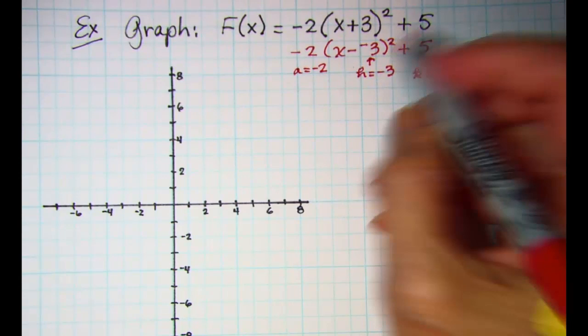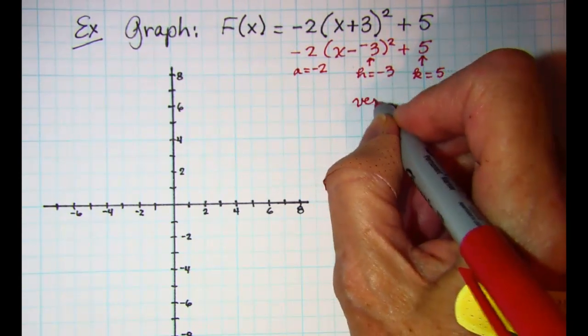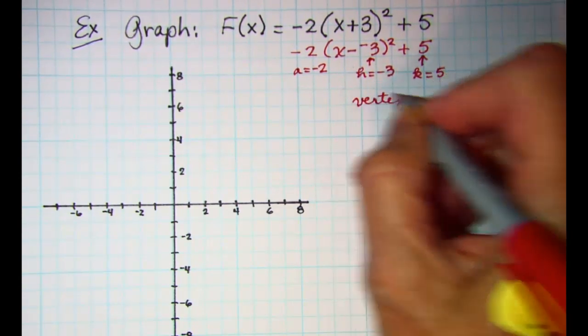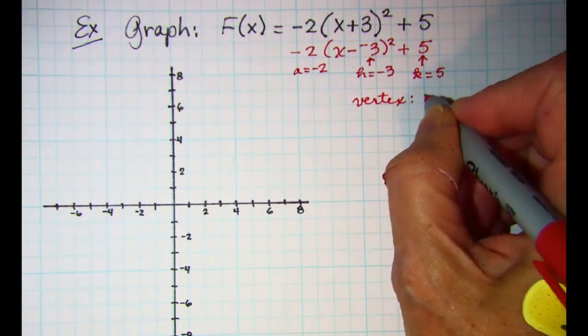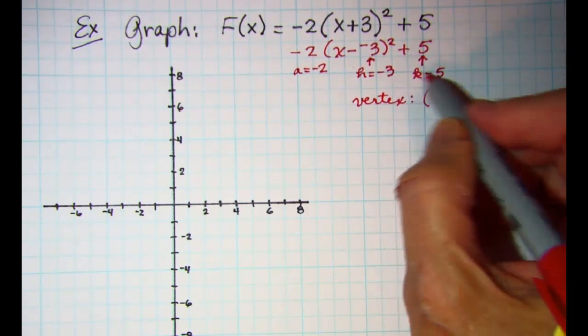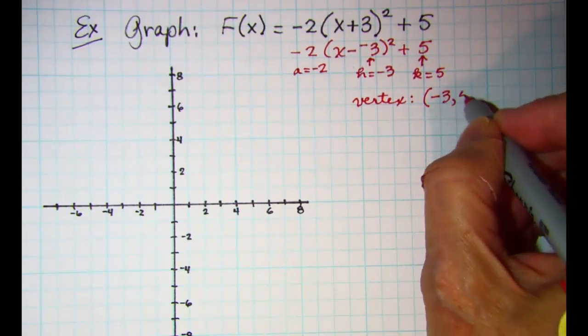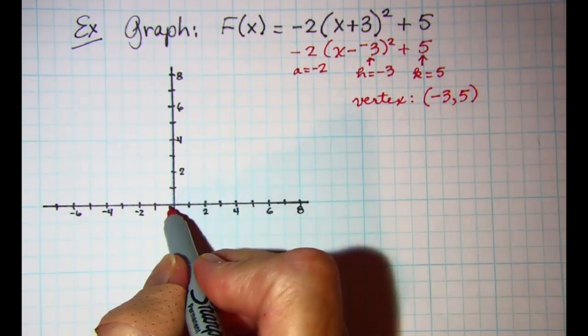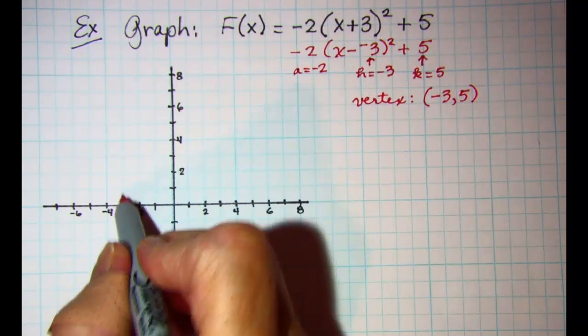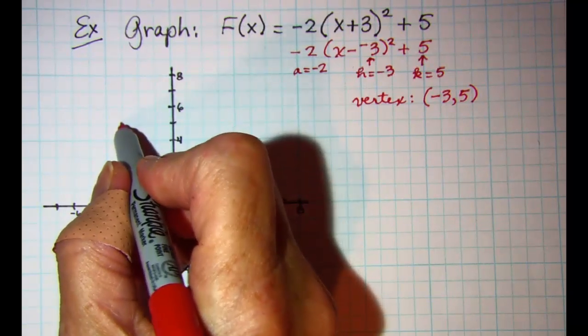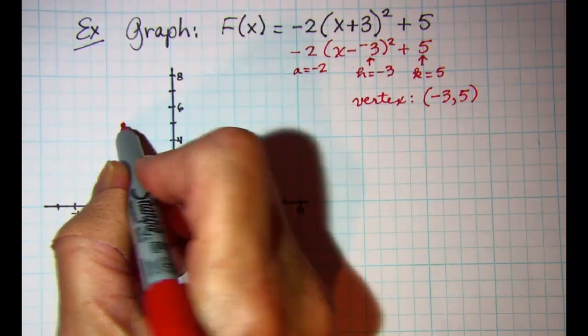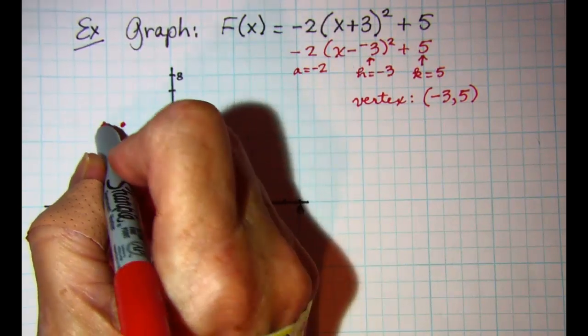So our vertex is the point (h, k), or negative 3, 5. This is our vertex.